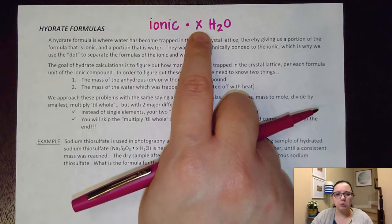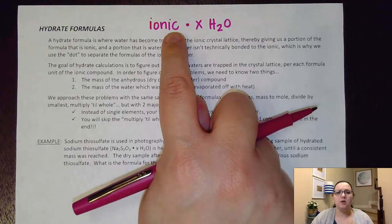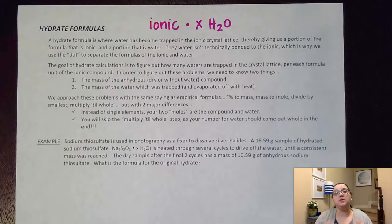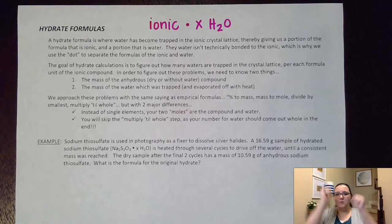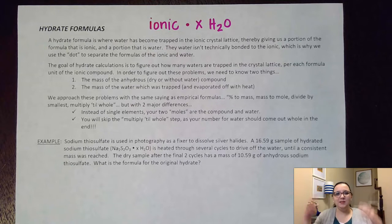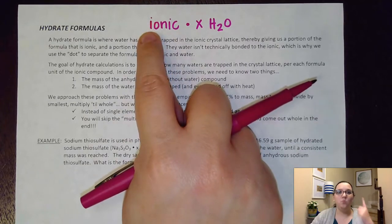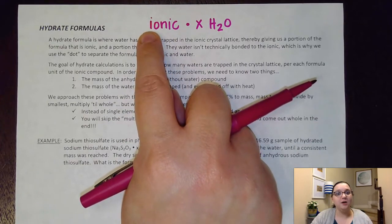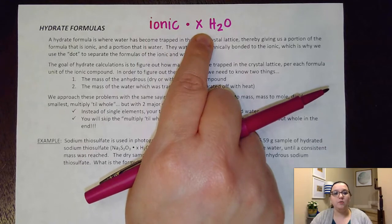Now these waters aren't really bonded to the ionic, rather they're trapped within the lattice structure. As a reminder, ionics have kind of a regular repeating pattern of cations and anions, and what happens is that water molecules can kind of sneak their way into the empty spaces of the lattice structure. So we end up with this ratio of one formula unit of the ionic versus a set number of waters.